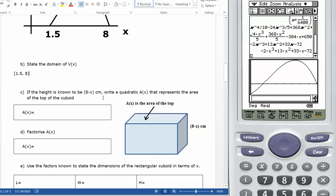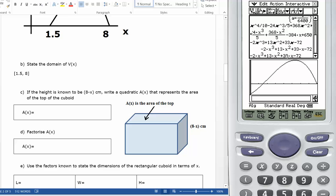If the height is known to be this, so there is my height, 8 minus x, write a quadratic A(x) squared. So I'm going to go back up here, take that. So this is the height and this is the area. And this times the area should give me the volume.